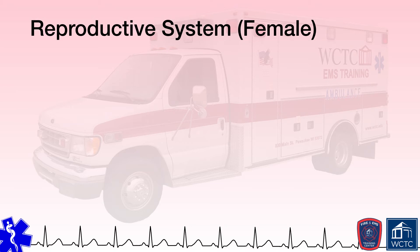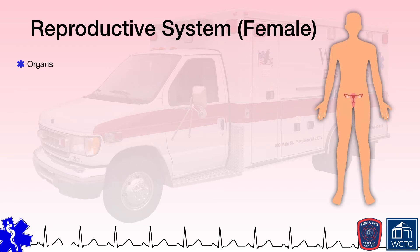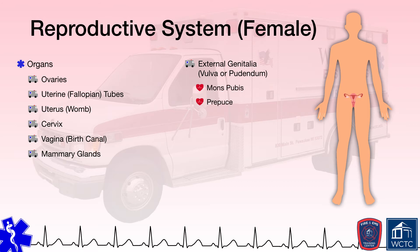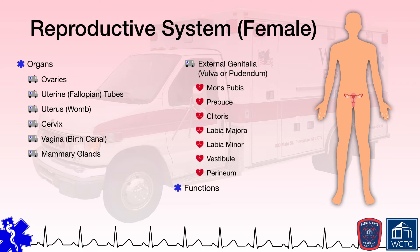The last organ system we need to review is the reproductive system, which varies considerably in form between men and women. The female reproductive system consists of ovaries, uterine or fallopian tubes, the uterus, cervix, vagina or birth canal, mammary glands, and the external genitalia collectively referred to as the vulva or pudendum, which includes the mons pubis, prepuce, clitoris, labia majora, labia minora, vestibule, and perineum. The purpose of the reproductive system is to reproduce or create offspring. The female reproductive system is specialized for receiving male gametes, fertilization of the female gamete, gestation of the fetus, and delivery of the baby.